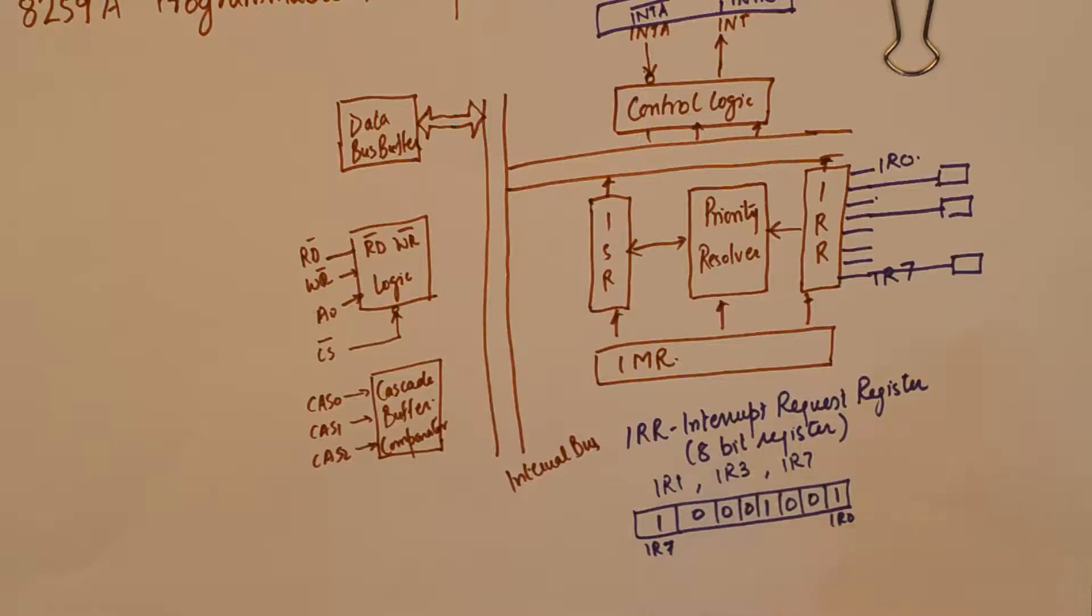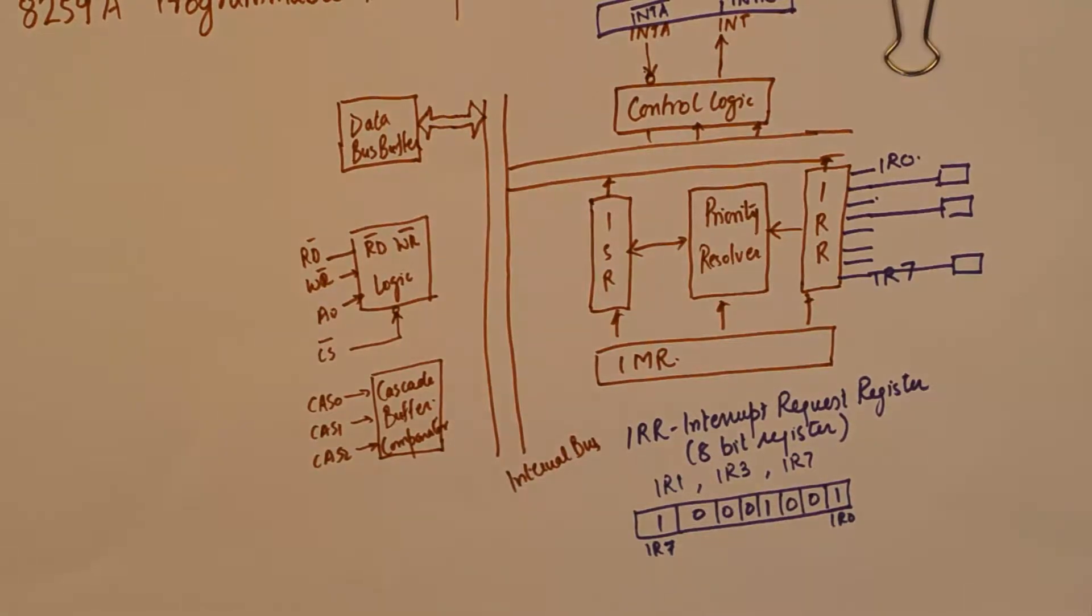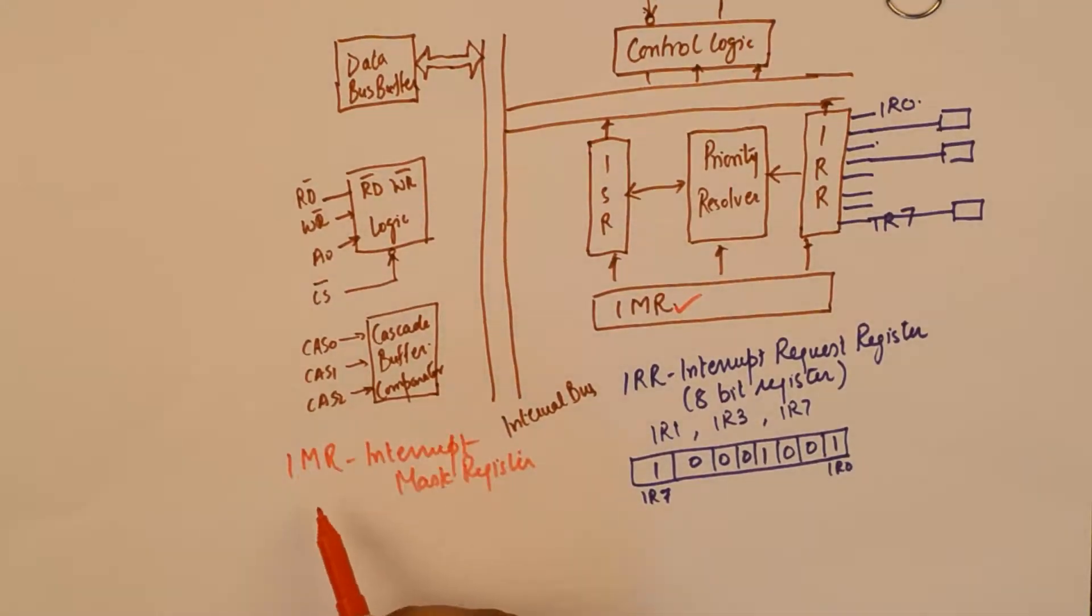So whenever an interrupt request is given to 8259, 1 is stored on the respective bit of the interrupt request register. Now the second special function register inside the programmable interrupt controller is the IMR. IMR is interrupt mask register.